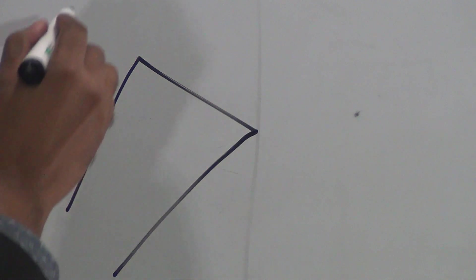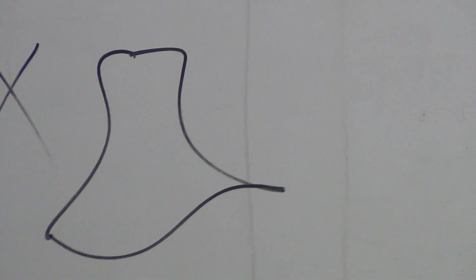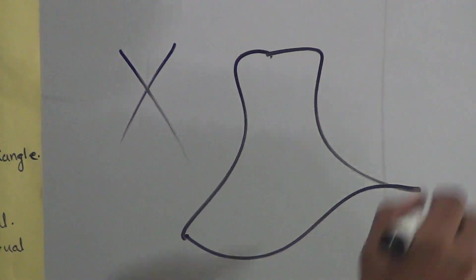Here three line segments exist but they do not make any bounded region, so it is not a triangle. Here a bounded region exists, but it is not made by any line segments, so it is also not a triangle.